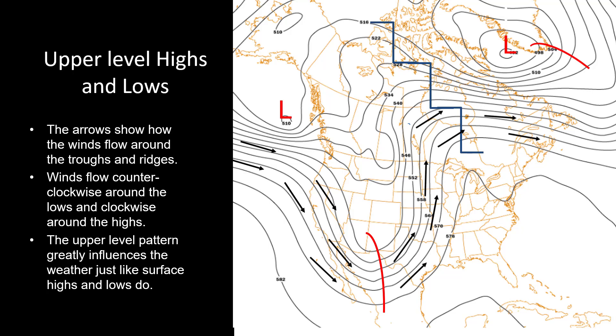We have ridges and troughs in the upper levels of the atmosphere. The arrows show how the winds flow around the troughs and ridges. Winds flow counterclockwise around the lows and clockwise around the highs. The upper level pattern greatly influences the weather just like surface highs and lows do.